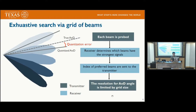As an example of prior work, in the grid-of-beam approach, the base station or transmitter forms a grid of beams, each steering toward a predefined angular direction. After receiving all beams, the receiver picks the beam with the highest received signal power. However, there is a quantization error between the actual AOD and the quantized AOD, introduced by beam formation, with the degree of error depending on beam width.